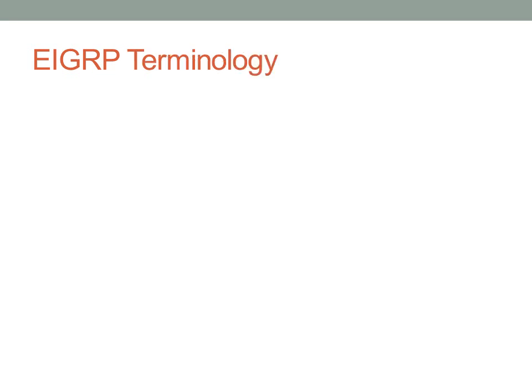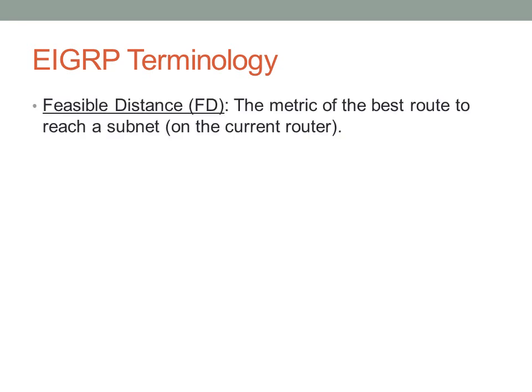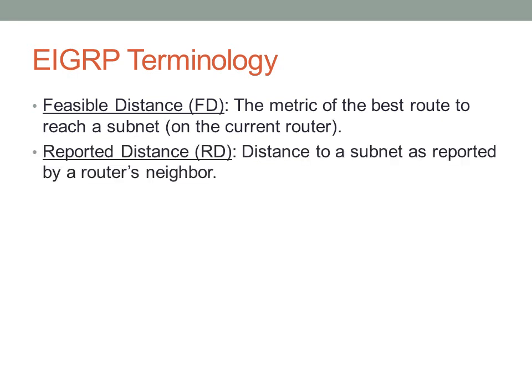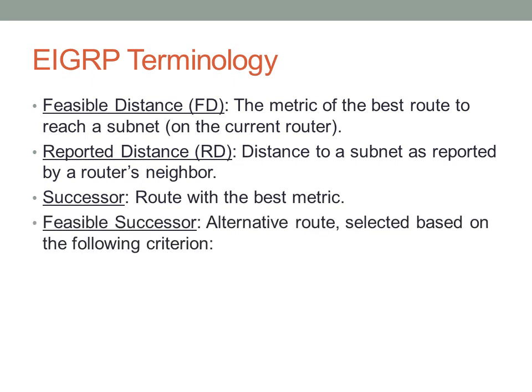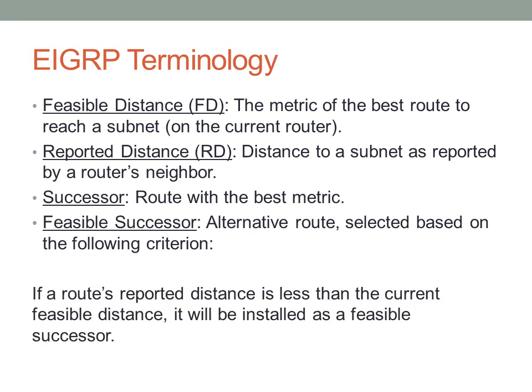There is some EIGRP-specific terminology to know. Feasible distance is the cost of the best route to reach a given subnet. Reported distance is the distance reported upstream by the router's neighbor. The successor is the route with the best metric to a given network, and that metric is the feasible distance. The feasible successor is an alternative backup route — it is installed as a feasible successor only if its reported distance is less than the current feasible distance.